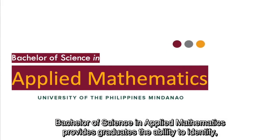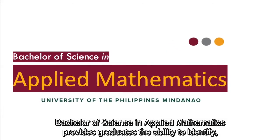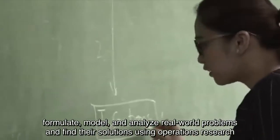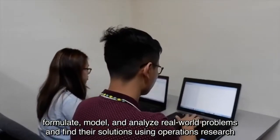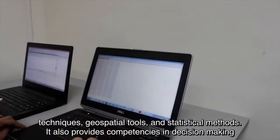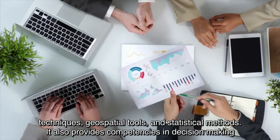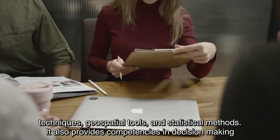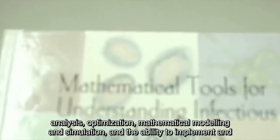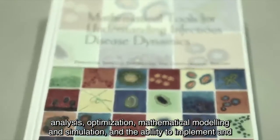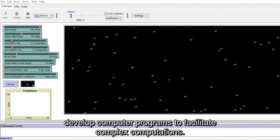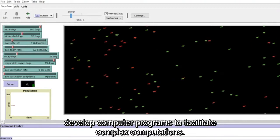Bachelor of Science in Applied Mathematics provides graduates the ability to identify, formulate, model, and analyze real-world problems and find their solutions using operations research techniques, geospatial tools, and statistical methods. It also provides competencies in decision-making analysis, optimization, mathematical modeling and simulation, and the ability to implement and develop computer programs to facilitate complex computations.